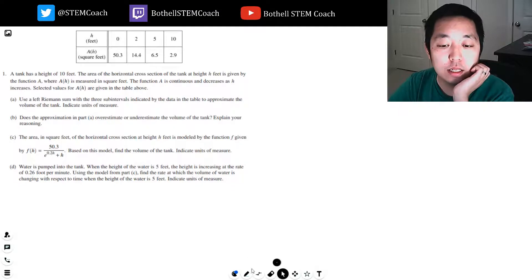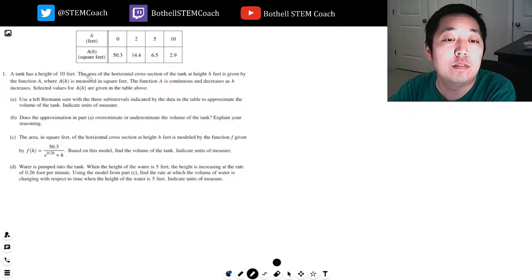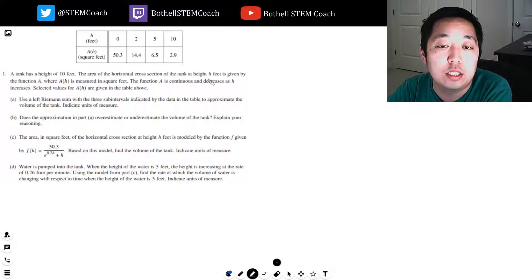A tank has a height of 10 feet. The area of the horizontal cross-section of the tank at height h feet is given by the function a, where a of h is measured in square feet. The function a is continuous and decreases as h increases. Selected values of a of h are given in the table above. Use a left Riemann sum with three sub-intervals indicated by the data in the table to approximate the volume of the tank. Indicate the unit of measure.